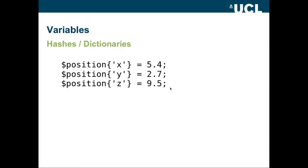Now we also have what in Python is called a dictionary, but in Perl is called a hash. We can refer to a whole hash using a percent sign. So percent position would be the whole of the position hash. Just as in Python, we refer to particular items with a string. So position x equals 5.4, position y equals 2.7, position z equals 9.5.